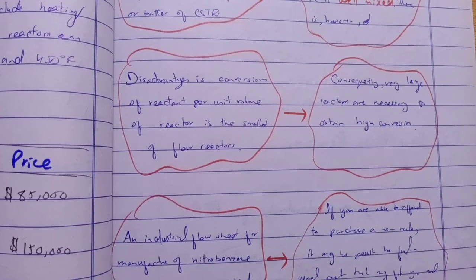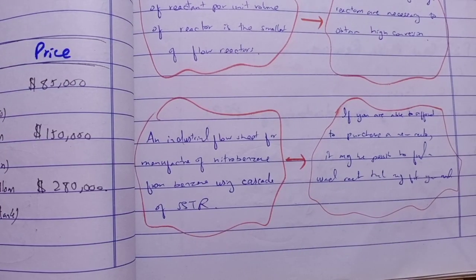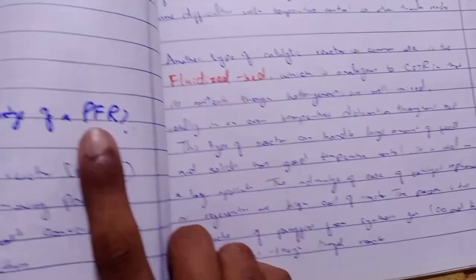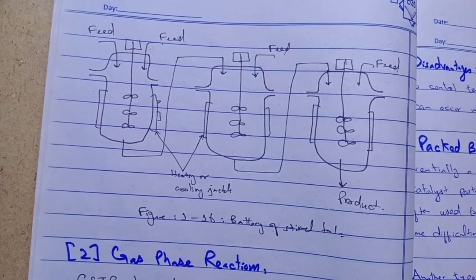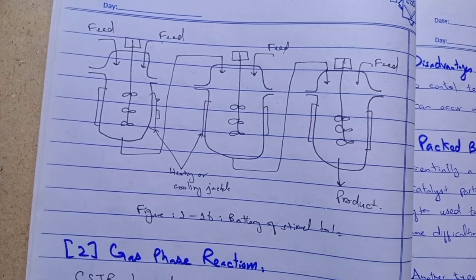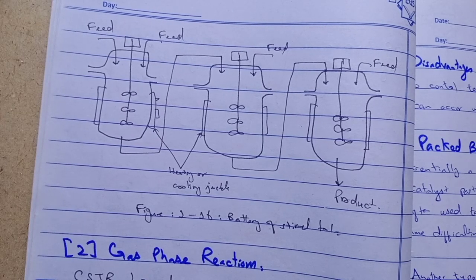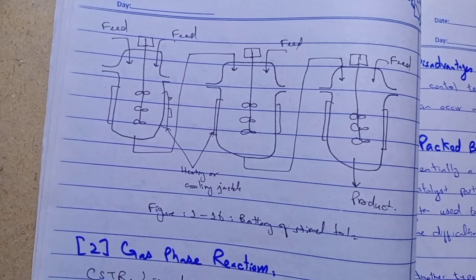Consequently, very large reactors are necessary to obtain high conversion. An industrial flow sheet for the manufacturing of nitrobenzene from benzene uses a cascade of CSTRs — a battery of stirred-tank reactors in series. I am very thankful to you for watching my video. Please subscribe to my YouTube channel and share with friends if you want to learn about chemical reaction engineering.